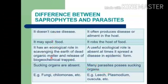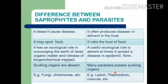Examples of saprophytes include fungi, mushroom (biological name Agaricus), and Chilomonas which is an animal. Examples of parasites include leech, plasmodium, parasitic plant Cuscuta, and the most important one — corona virus — you can add that too.